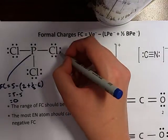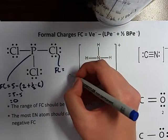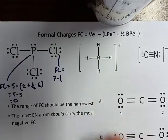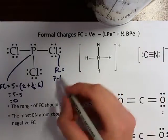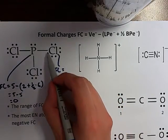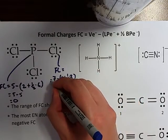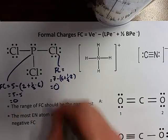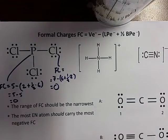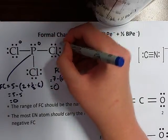If we look at chlorine, the formal charge equals how many valence electrons on the periodic table — seven — minus how many lone pair electrons, which is six, plus a half times how many bonding electrons, which is two. Seven minus seven is zero. Because these chlorines are all in the same environment, we can assume the formal charge for each of them is zero.